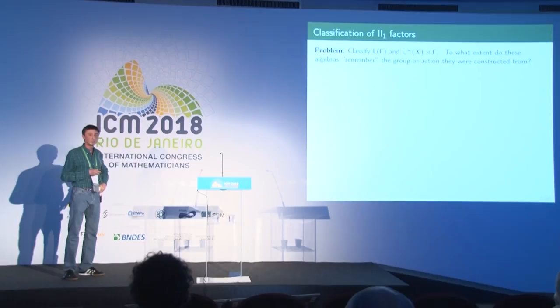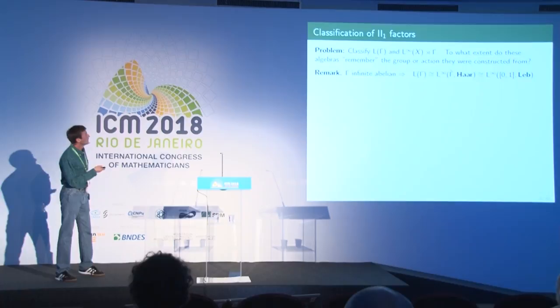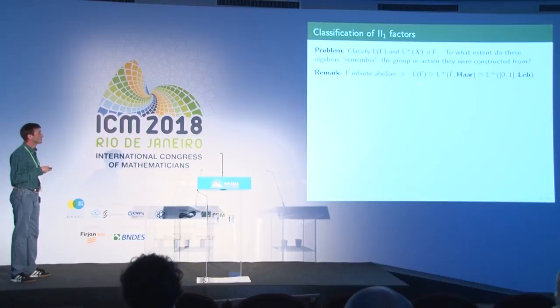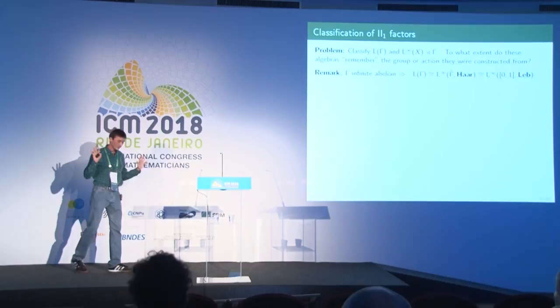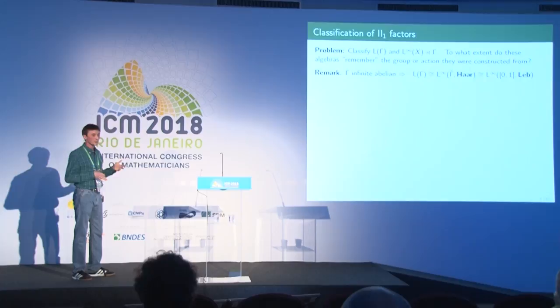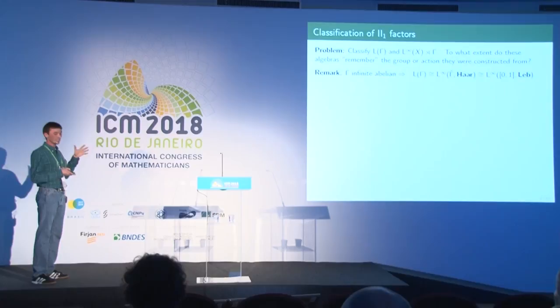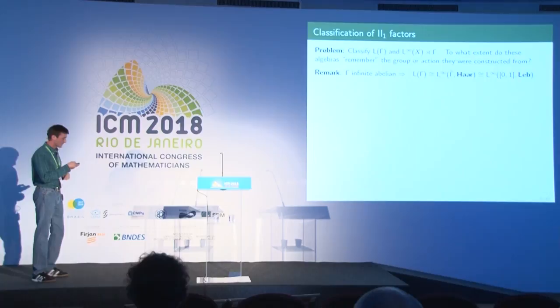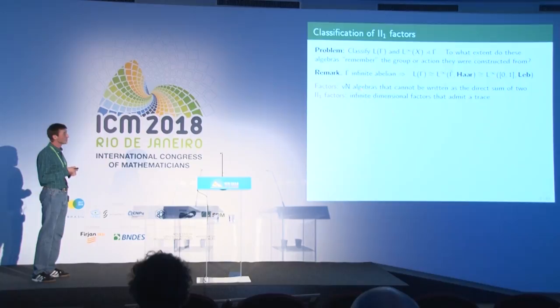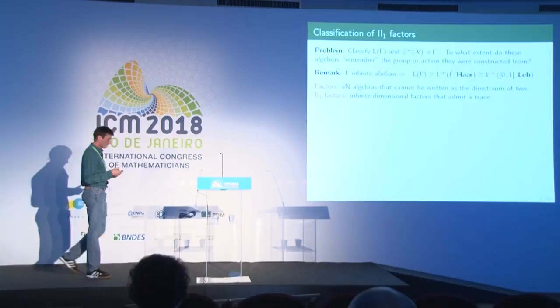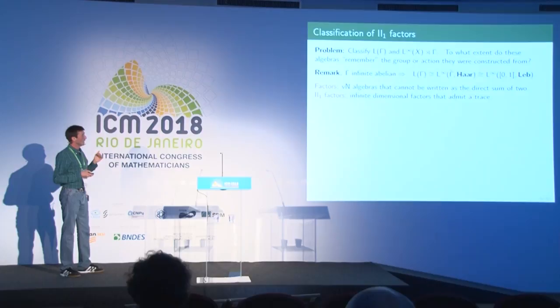For instance, if Γ is any infinite abelian group, using the Fourier transform you can show that L(Γ) is isomorphic to L∞([0,1]) with the Lebesgue measure. So any infinite abelian group gives the same von Neumann algebra. This is the trivial case, since when classifying objects you restrict to simple ones. The simple von Neumann algebras are called factors — a factor is a von Neumann algebra that cannot be decomposed as a direct sum of two von Neumann algebras. The algebras of interest also have traces, so they will be II₁ factors: infinite dimensional factors admitting a trace.